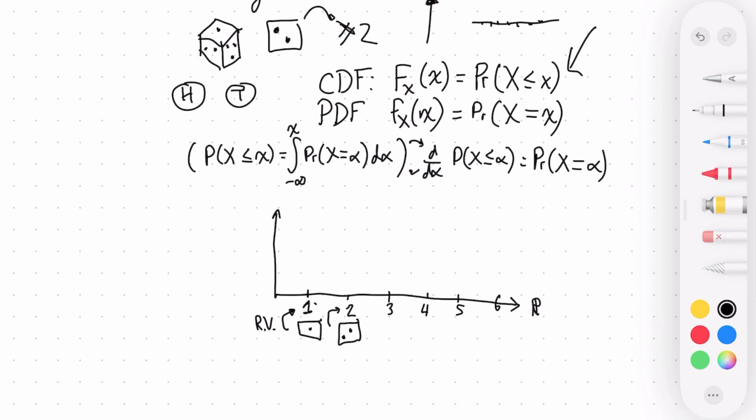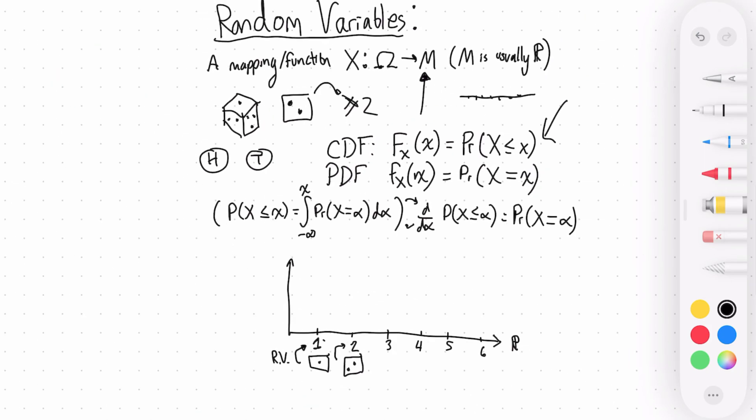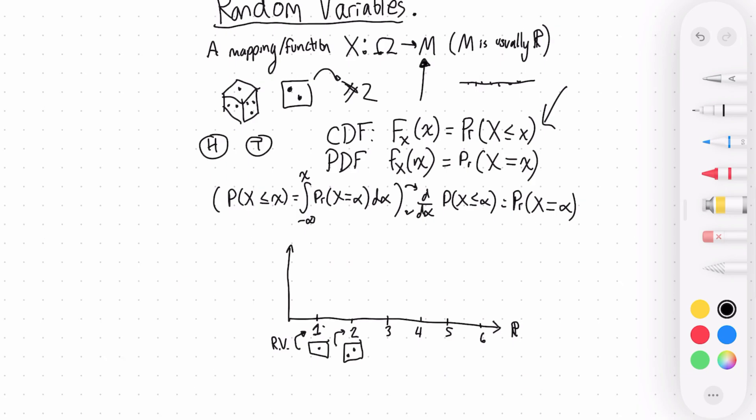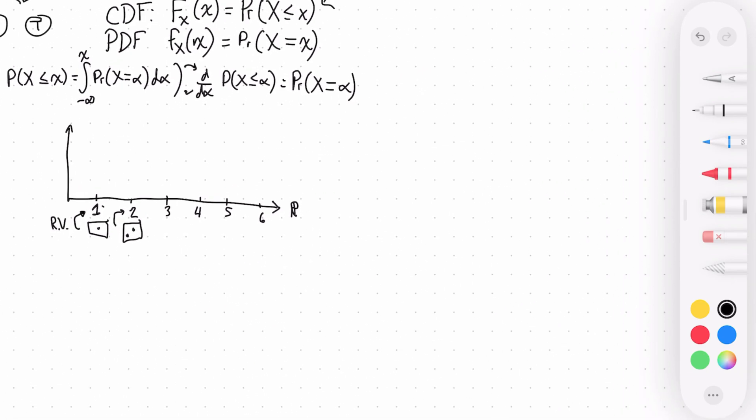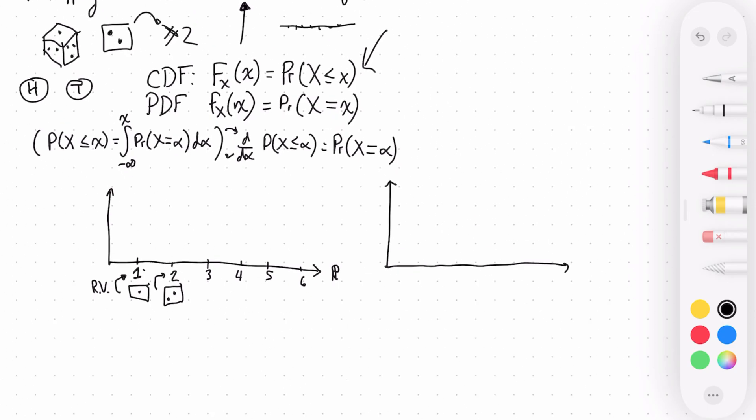And as a result, what we can do then is say, what is the probability that I get any of these particular numbers? Now this is a difficult thing to do. So let's go ahead and back up a second and do this in terms of the CDF first. So the random variable, once again, is going to map it to one, two, three, four, five, and six. And what we end up seeing here, and this would be the CDF, and this is going to be the PDF.